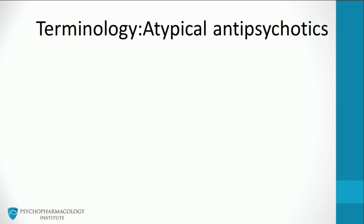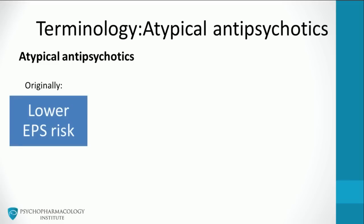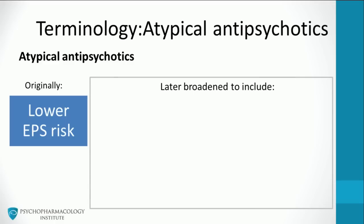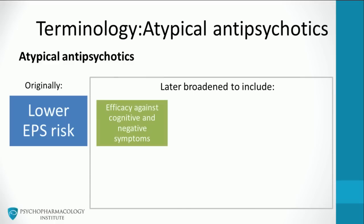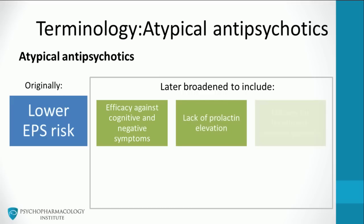What is an atypical antipsychotic? Originally, this term was used to describe a lower risk of extrapyramidal symptoms associated with clozapine use. Researchers found that at therapeutic doses, clozapine showed a much lower risk of extrapyramidal symptoms such as tardive dyskinesia. Later, the use of this term was broadened to include efficacy against negative and cognitive symptoms, lack of prolactin elevation, and efficacy in treatment-resistant patients.